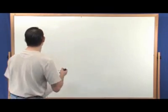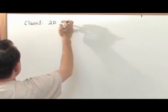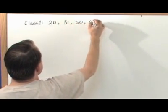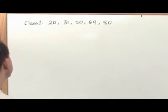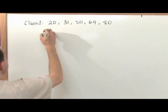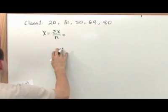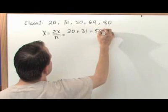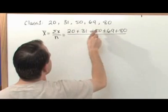So let's go ahead and do that. Let's say class number one consists of the following grades: 20, 31, 50, 69, and 80. Now let's just calculate the mean value. Let's see what this is. The mean value is going to be the sum of the values divided by the number of samples we have. So it's going to be 20 plus 31 plus 50 plus 69 plus 80 all divided by 1, 2, 3, 4, 5.